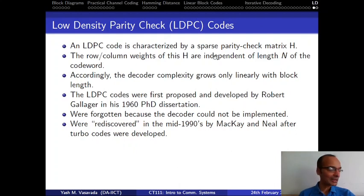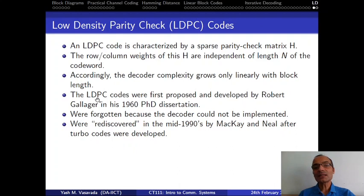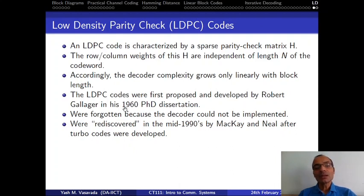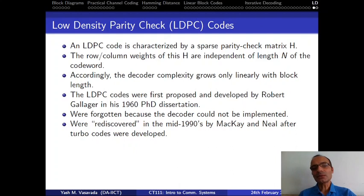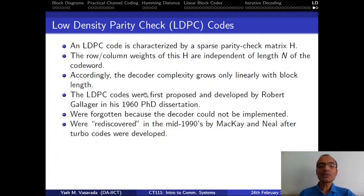That is why they are called low-density parity check codes. They were first described by Robert Gallager, who did his PhD from MIT all the way back in 1960. His PhD research was fantastic — he proposed these codes, analyzed them, and showed that they are quite powerful. But in those days, we didn't have MATLAB or C++, so there was not a lot of numerical backup of the performance of his proposal; the type of simulation work done in projects today was simply not feasible.